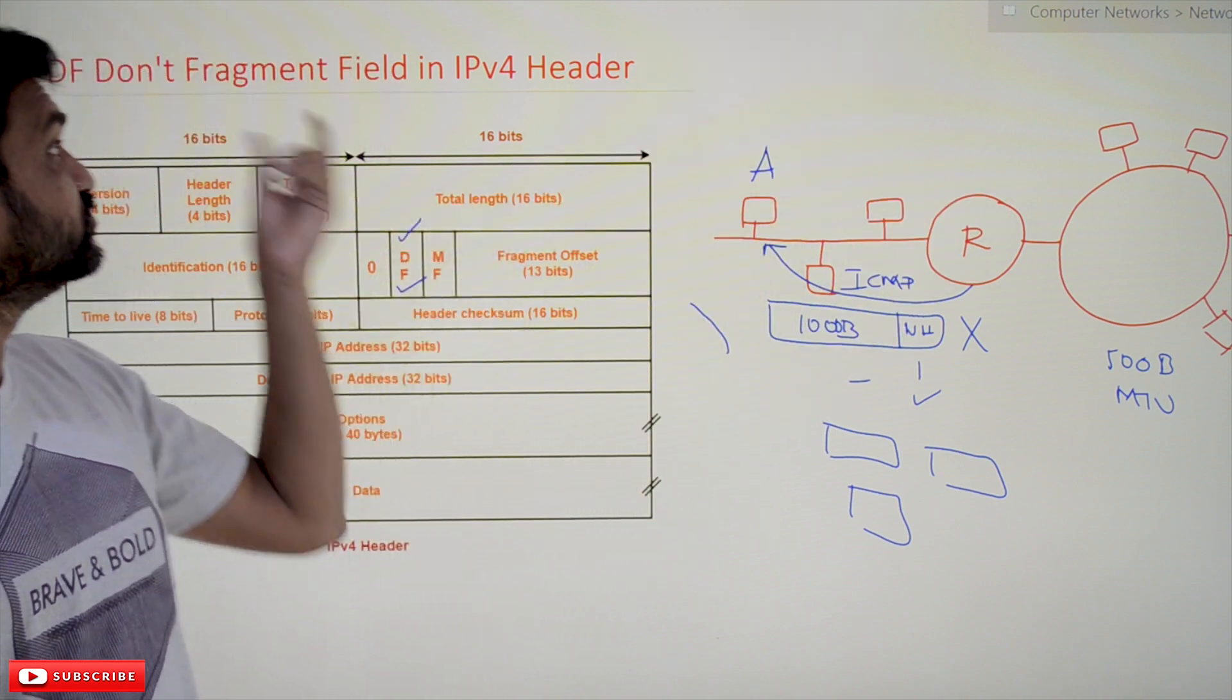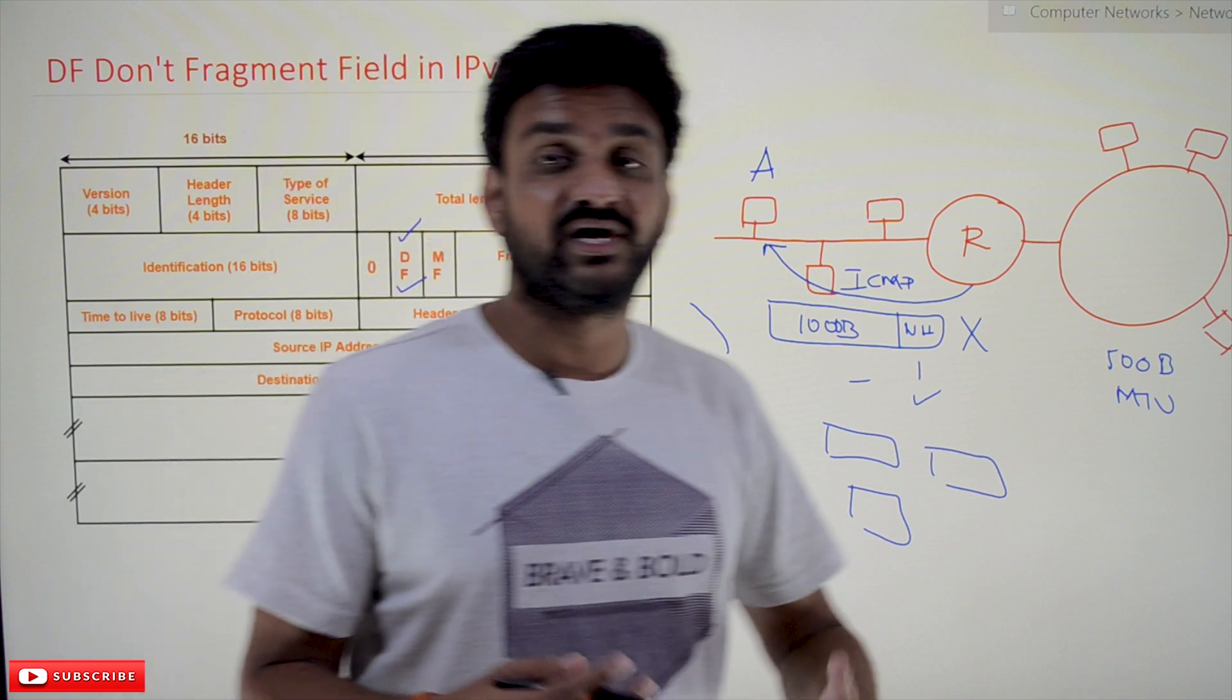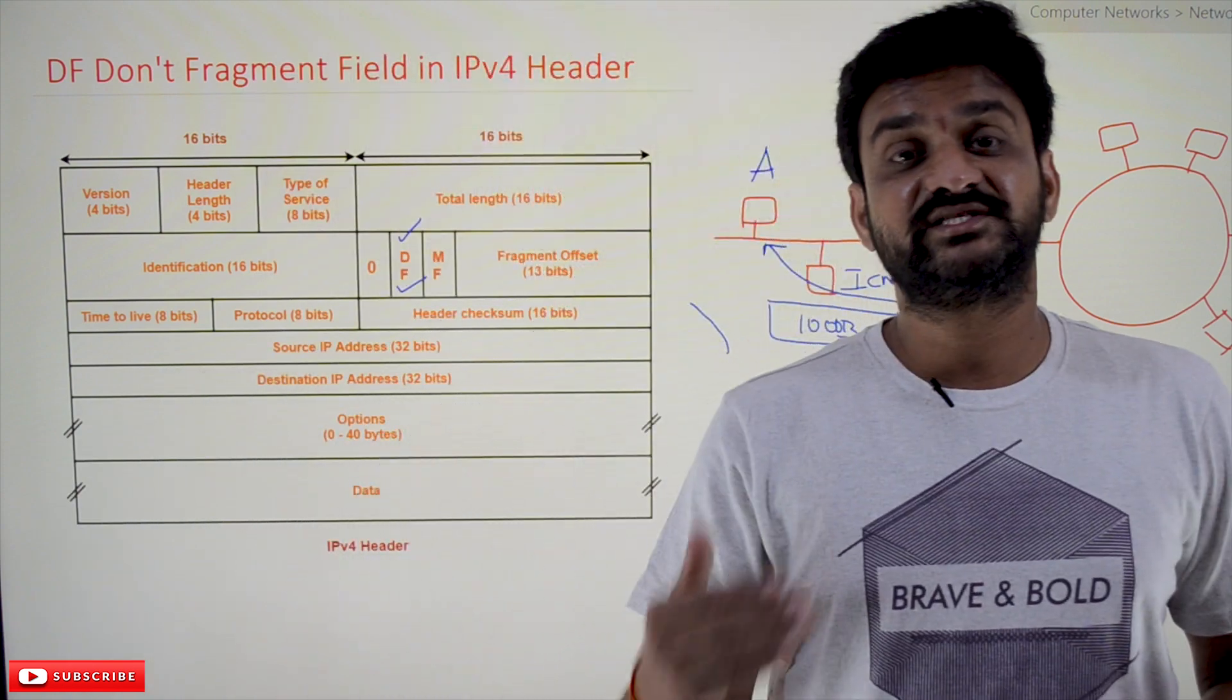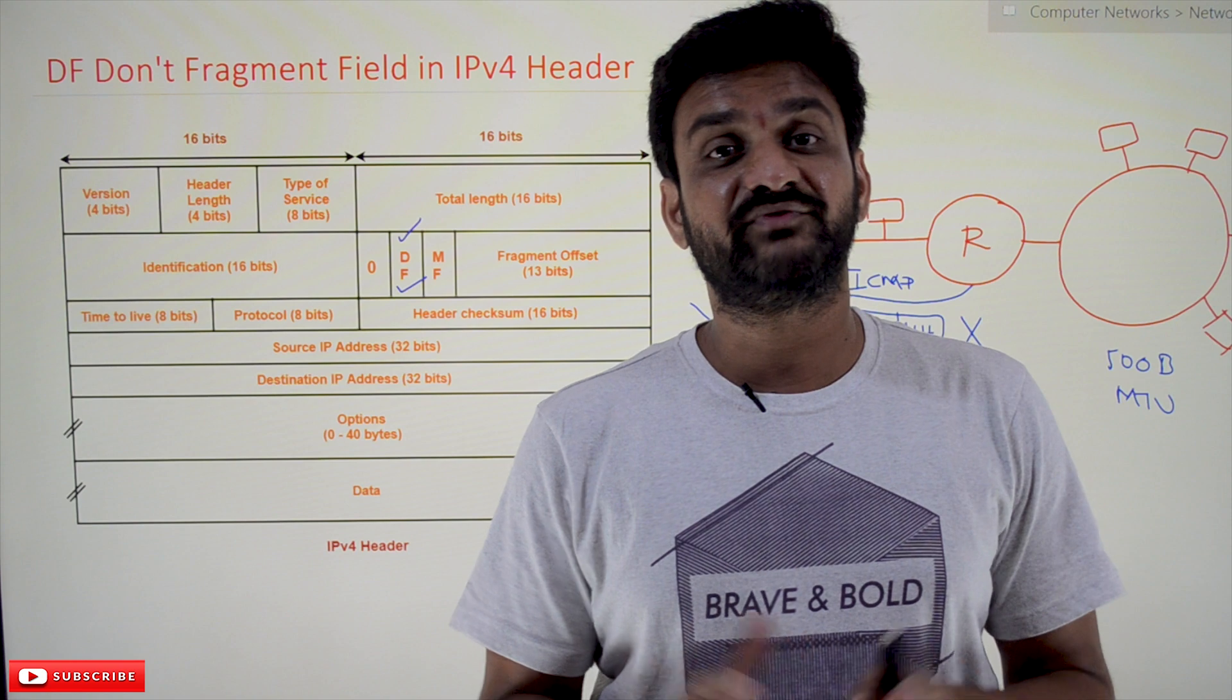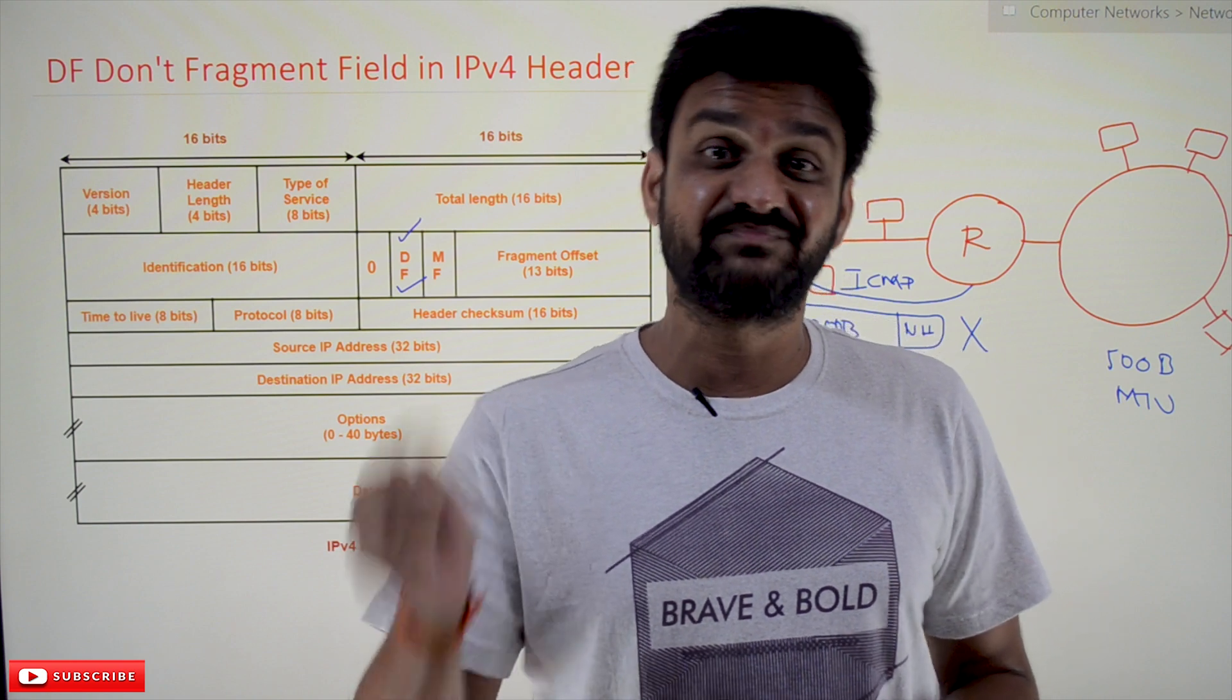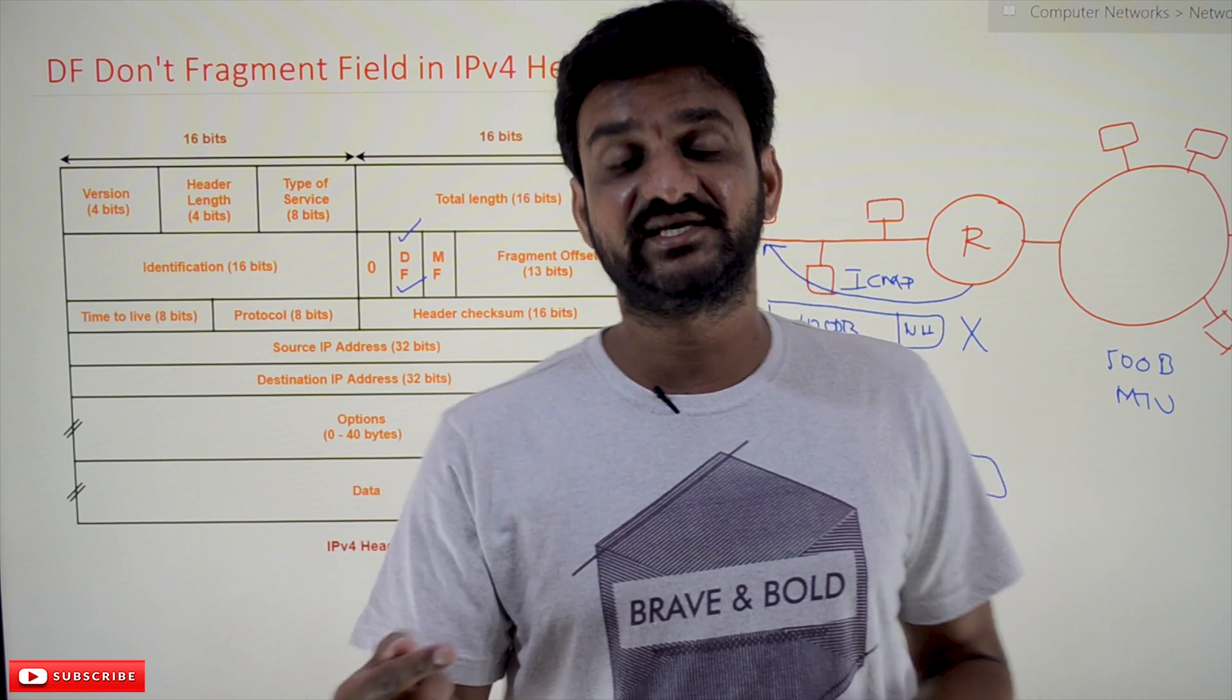This is the use of the DF field: there are some requirements where the sender doesn't want the packet to be fragmented into small pieces by the routers in between. In such cases, the DF is set to one.